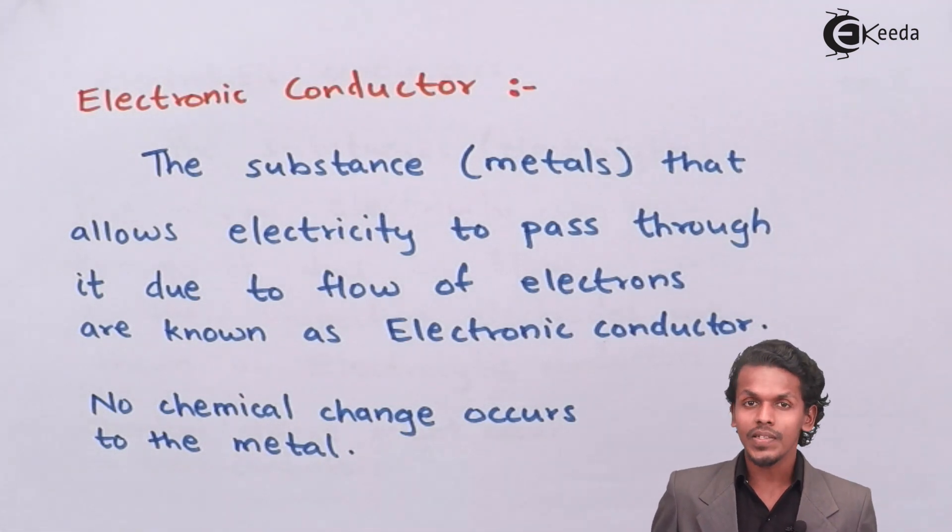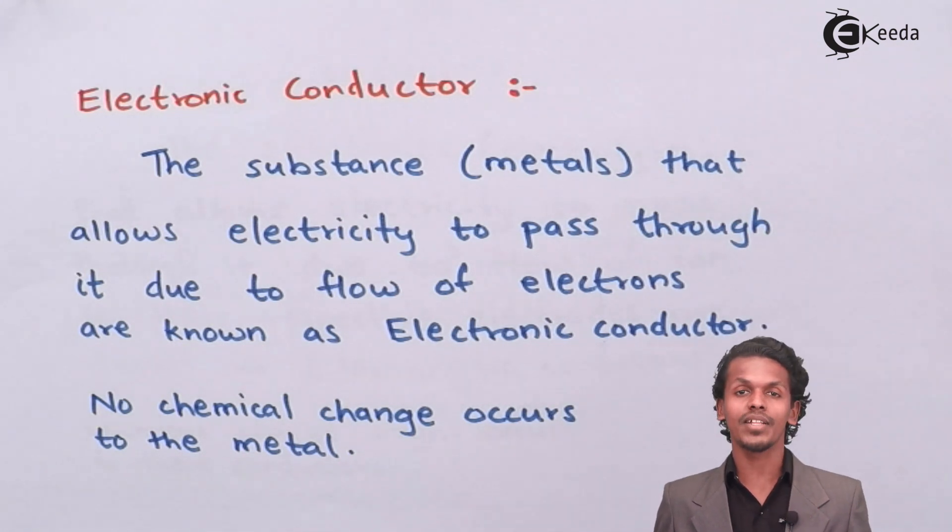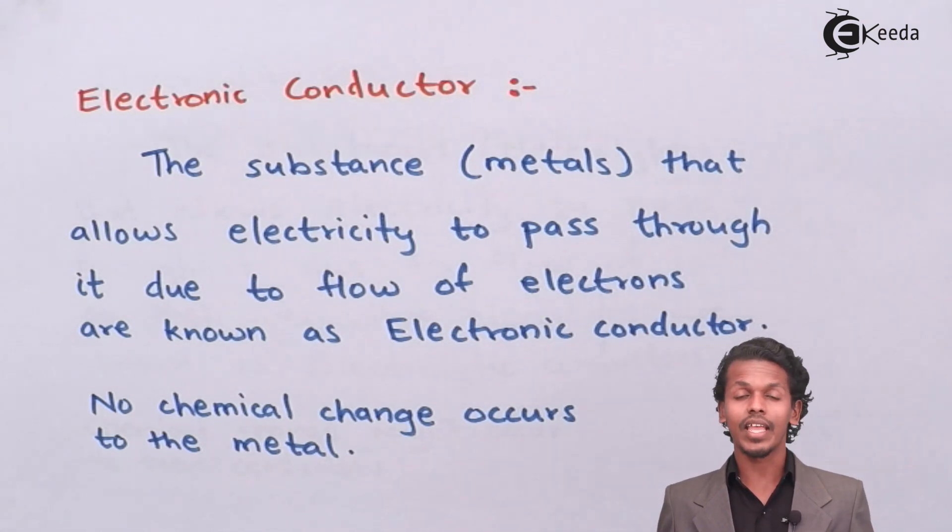But the main important thing is when electricity is passed through the metal then there is no chemical change that has been observed in the metal. For example, if we pass current through copper or any kind of metal which conducts electricity in a very efficient way, then there is no chemical change that we could observe.